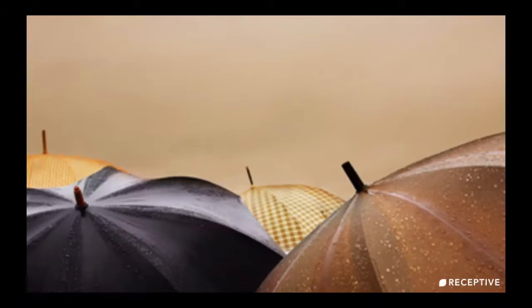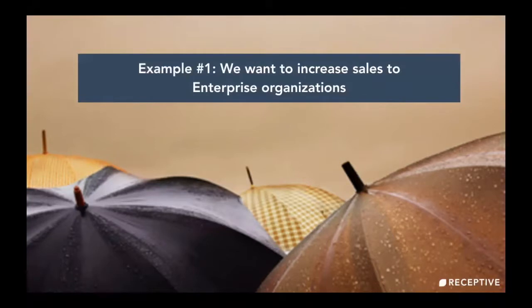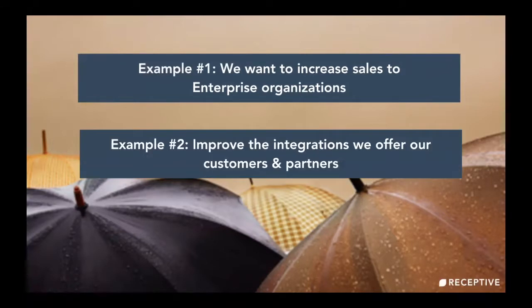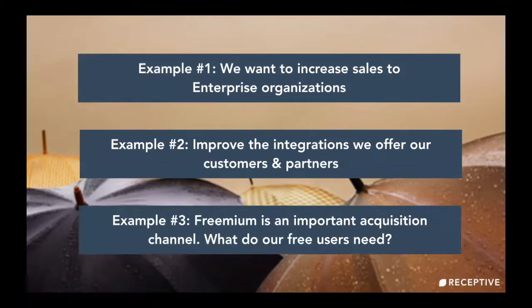Here are a few good examples of why strategy and goals are key. Example one: you might want to increase sales to enterprise organizations. Example two — one of ours from last year — was to improve the integrations we offer. And a third example is freemium: some people find freemium is a really great acquisition channel, so they want to focus on what free users need. The most powerful part of Receptive is it lets you slice and dice your product feedback to help you reach these goals.